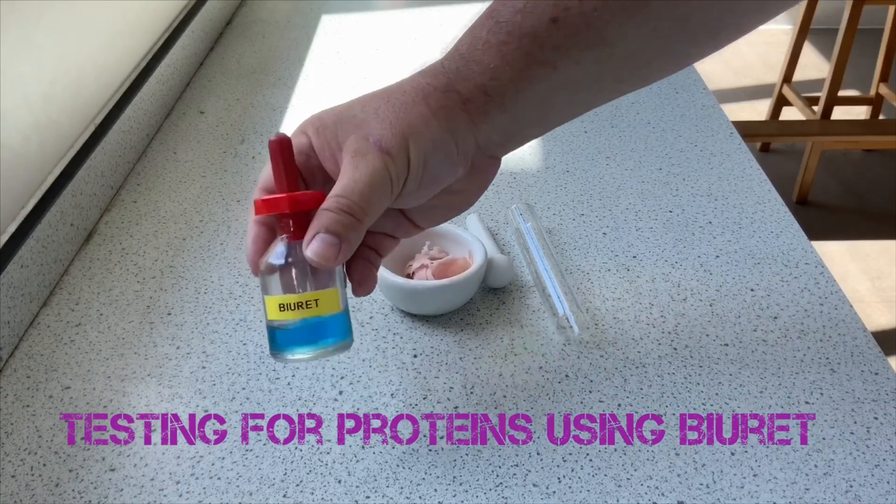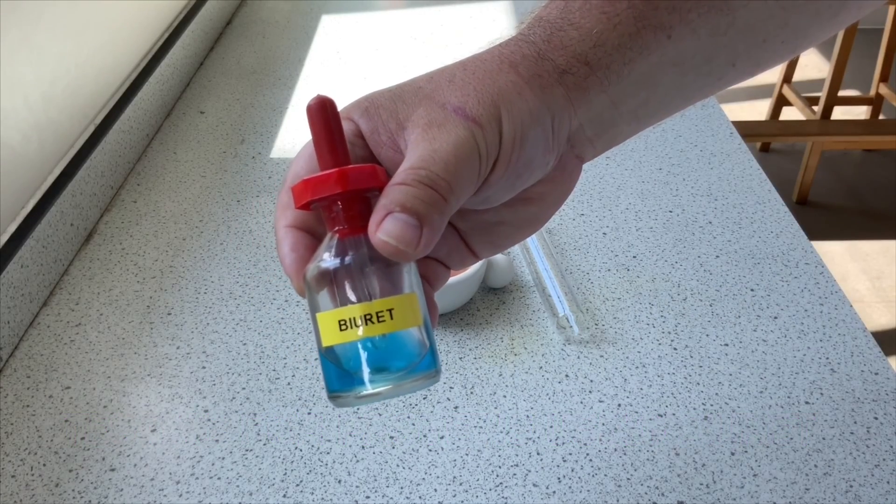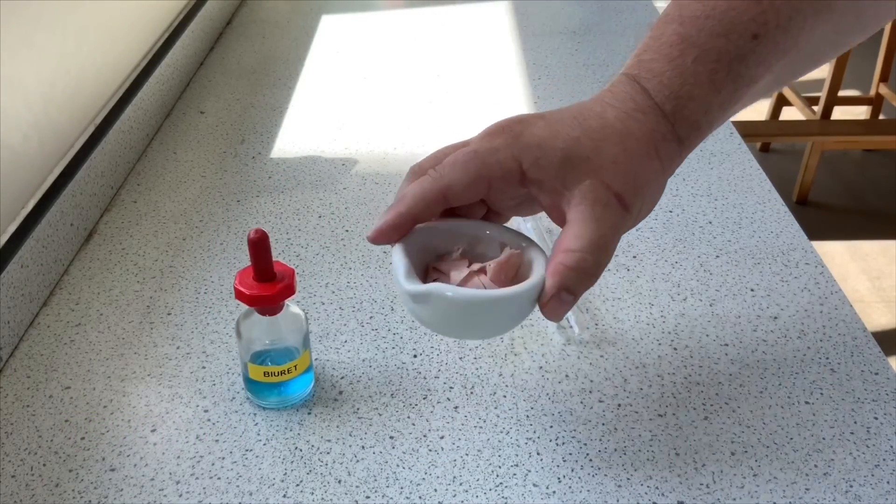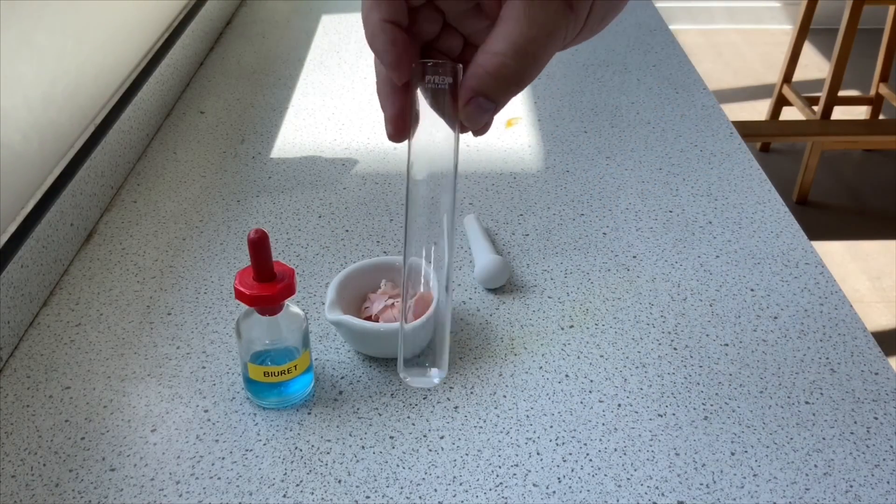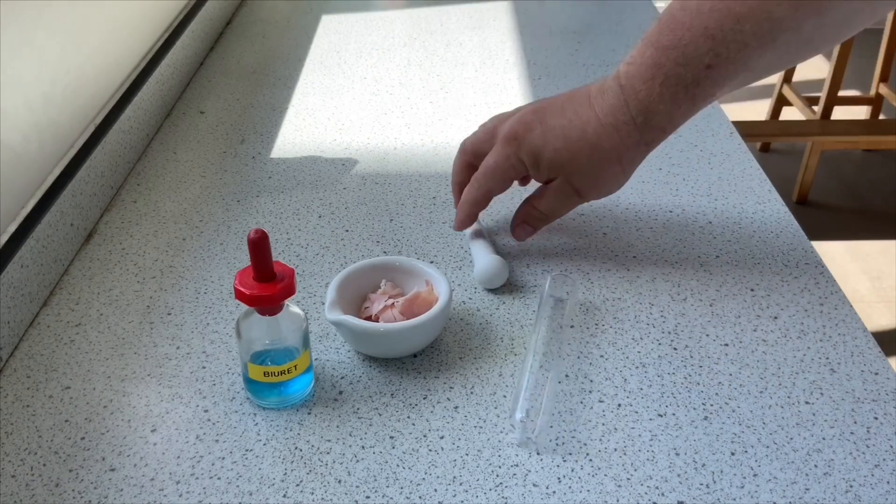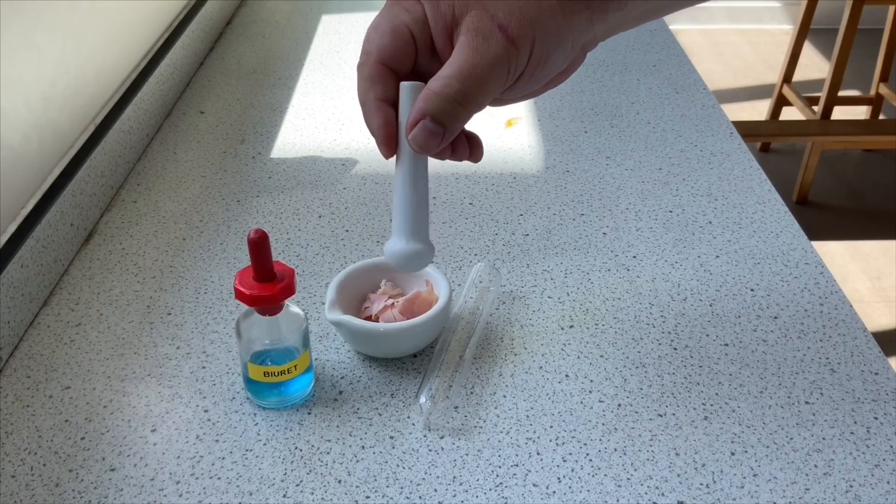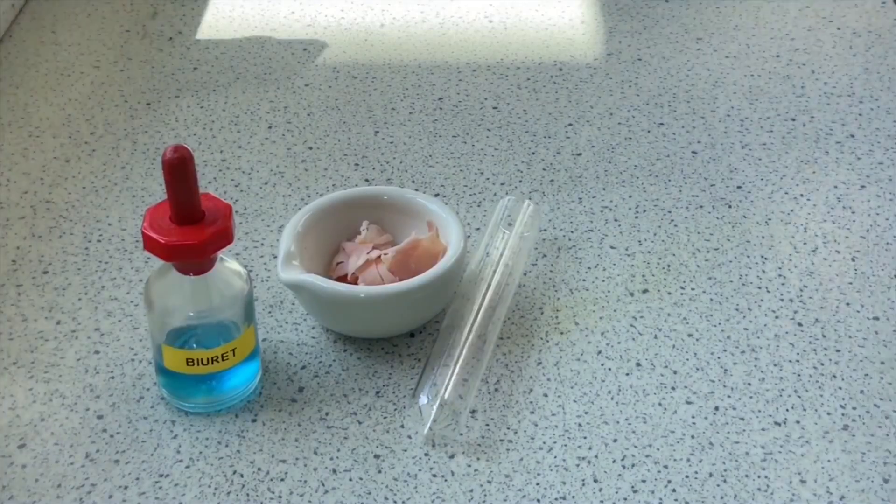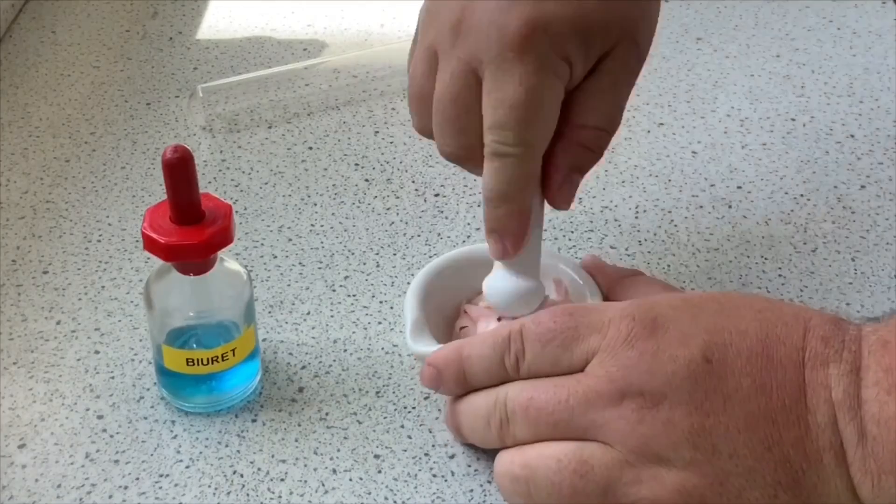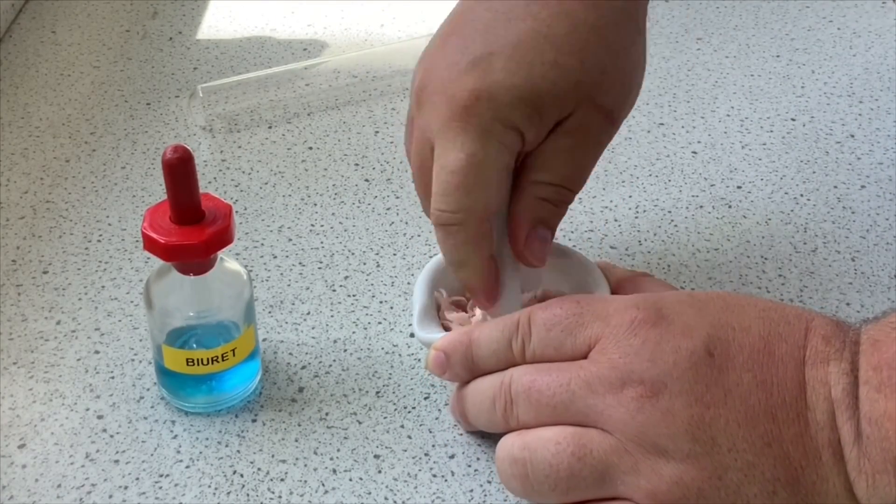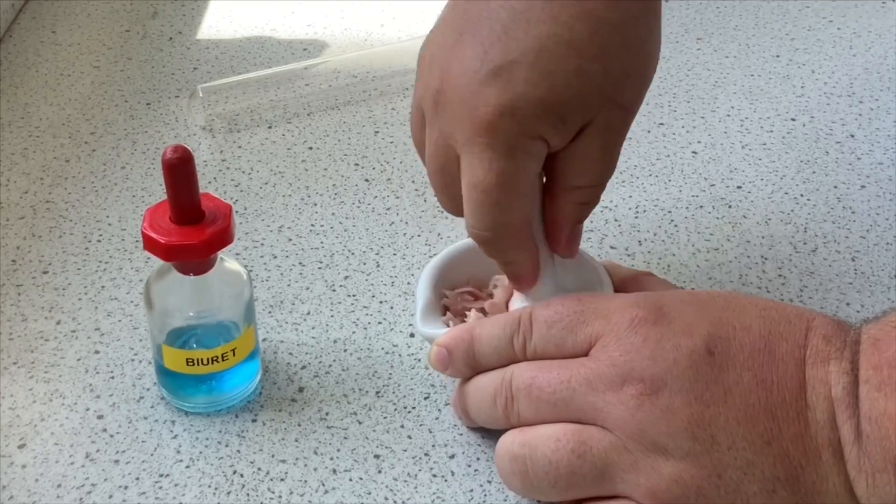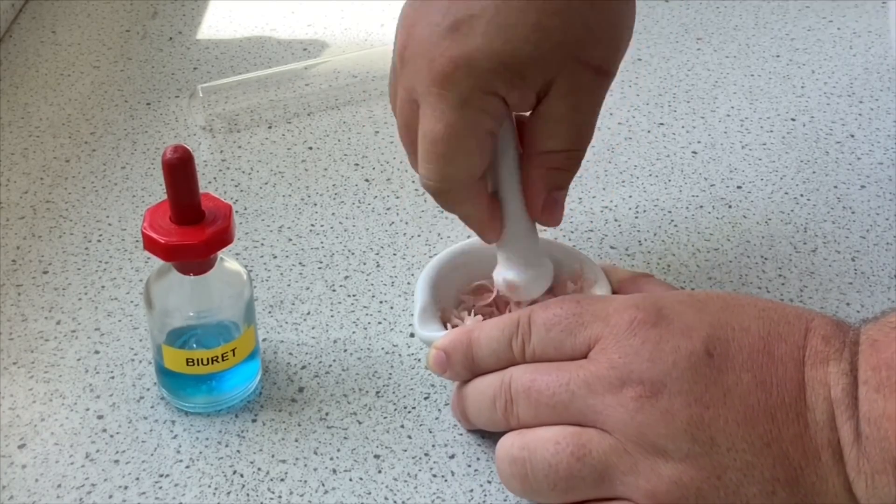Next one is a test for protein. This is called Biuret reagent. Again, it looks like Benedict's. I've got some ham here, a mortar and pestle, and then a boiling tube. The first thing I've got to do is crush up some of this meat here to try and release some of the proteins from it and to get it into sort of a solution mix.